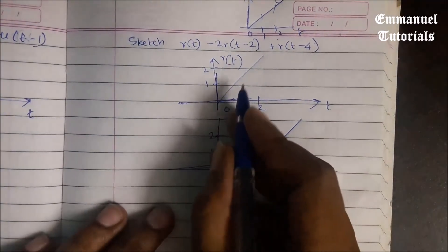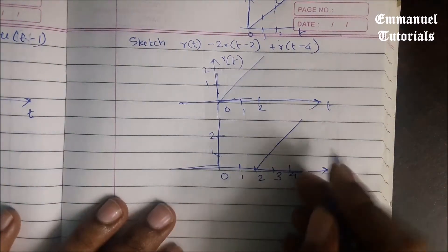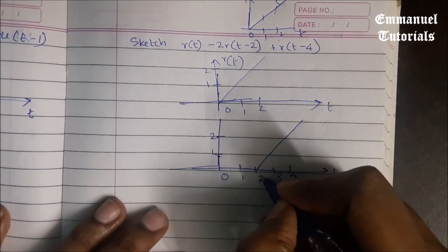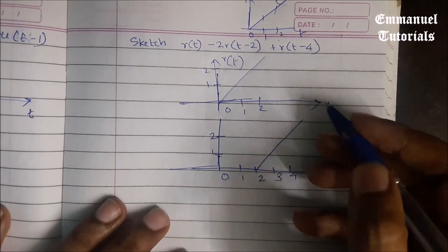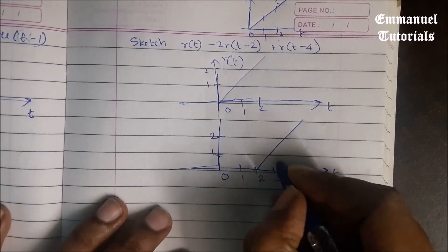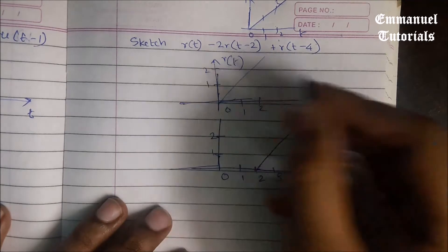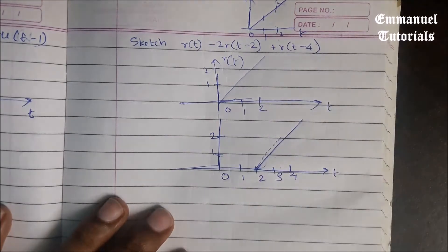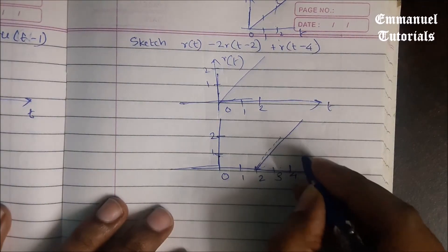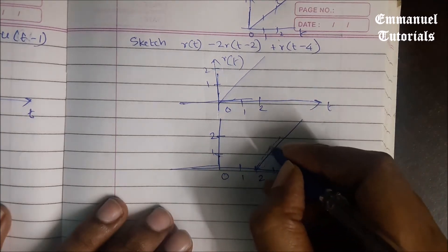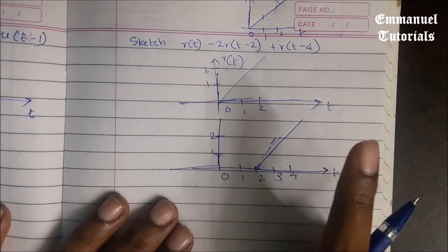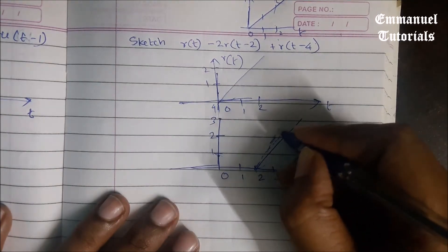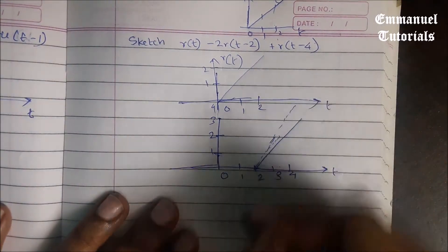This signal is not only time-shifted, it is also amplitude-scaled. So we are going to scale the shifted signal with an amplitude factor of 2. At t=2, the amplitude is 0, so in the resultant signal it will be 2×0=0. At t=3, the amplitude is 1, so the resultant is 1×2=2. At t=4, the original amplitude is 2, so in the resultant signal it will be 2×2=4. So the signal extends up to 4 in amplitude.